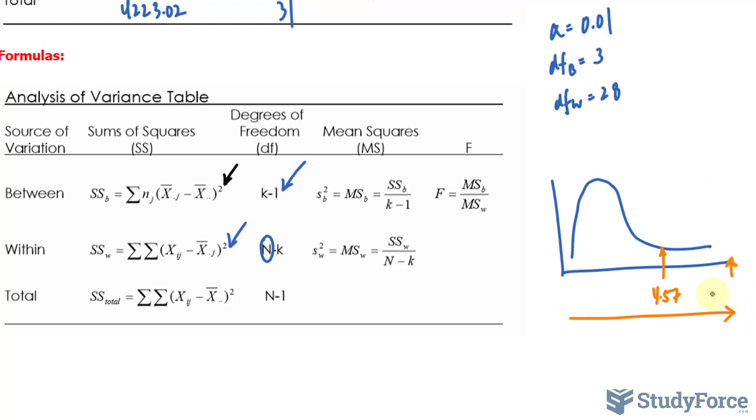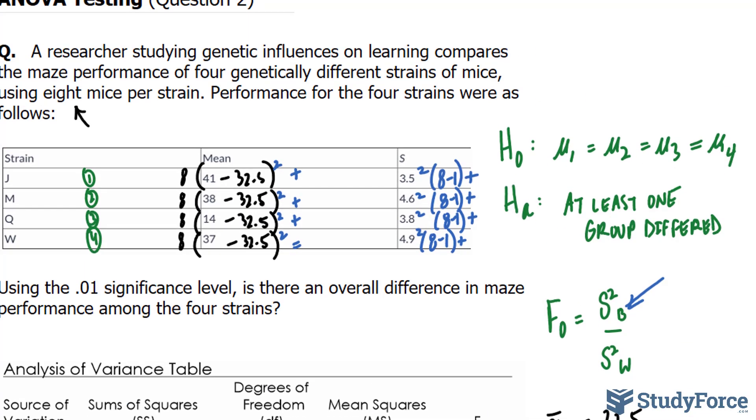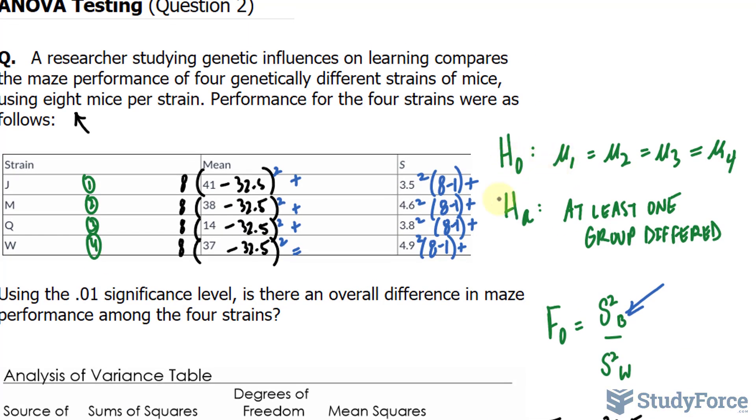This means that we have to reject the null hypothesis. The null hypothesis being that they're all the same. And we reject it in favor of the alternative.